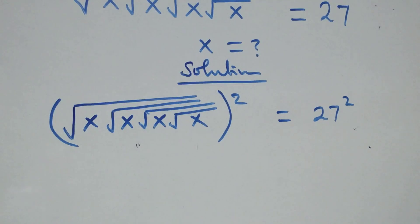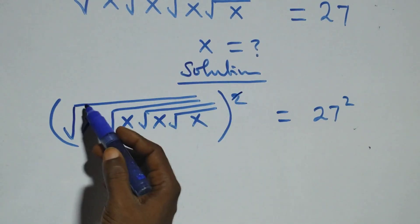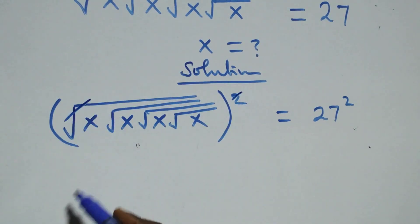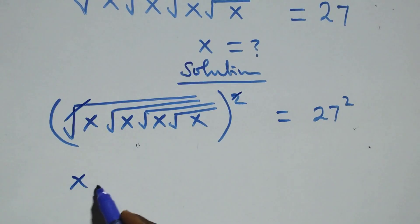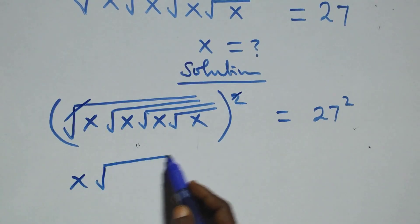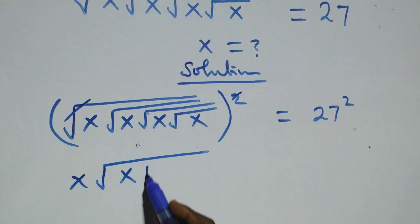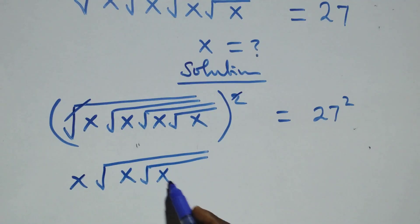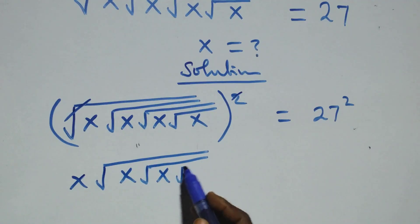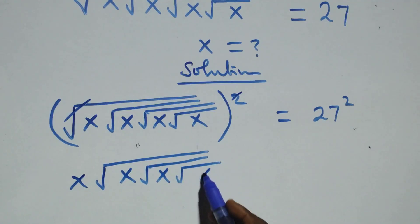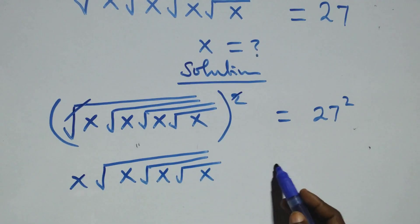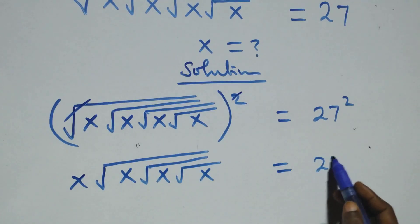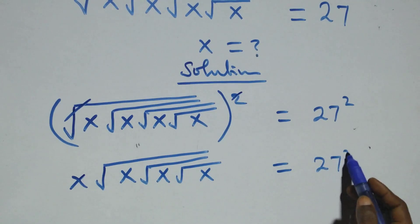At this step, the squares cancel the four square roots and we are left with x times square root of x, times square root of x, equals to 27 squared.